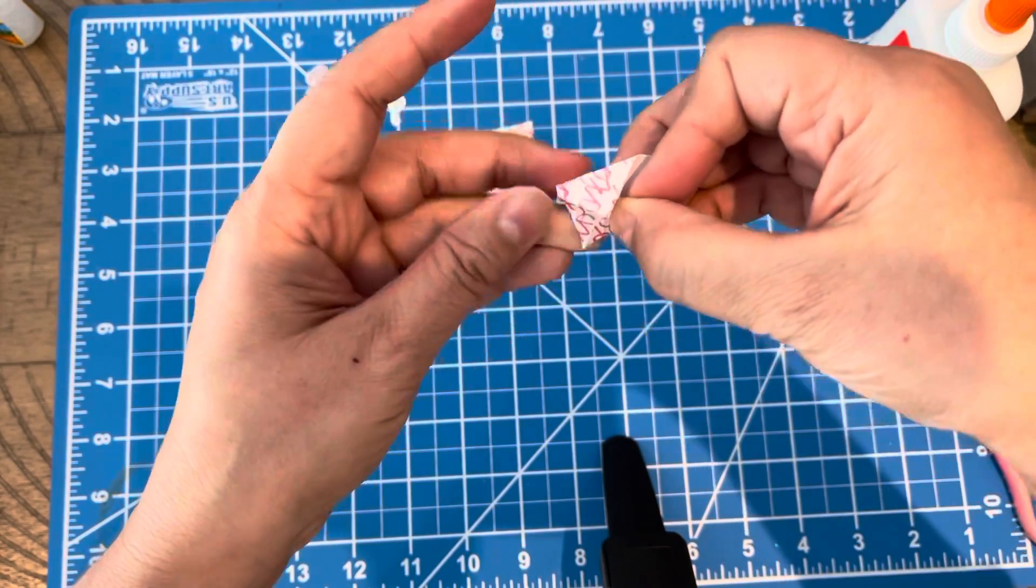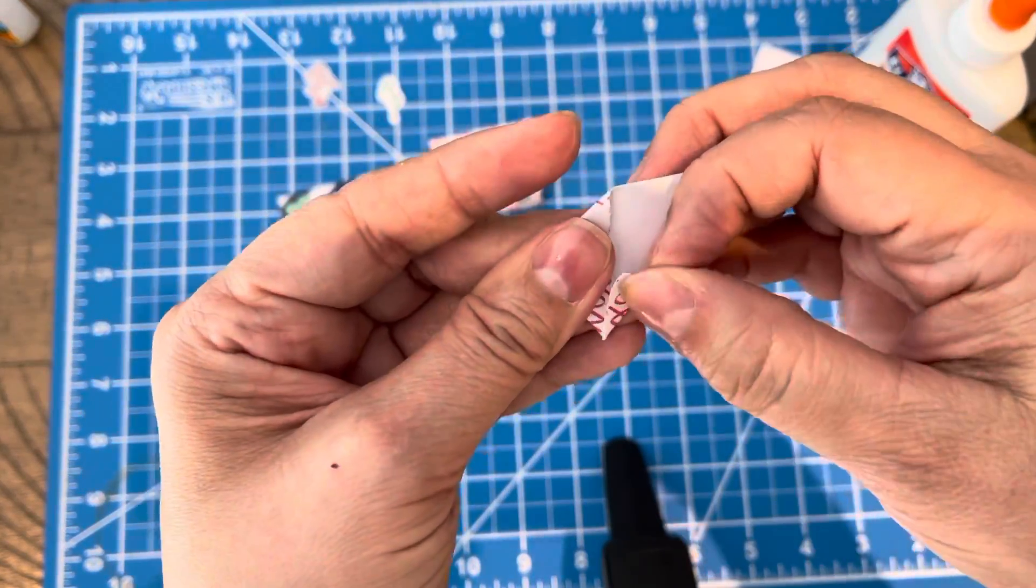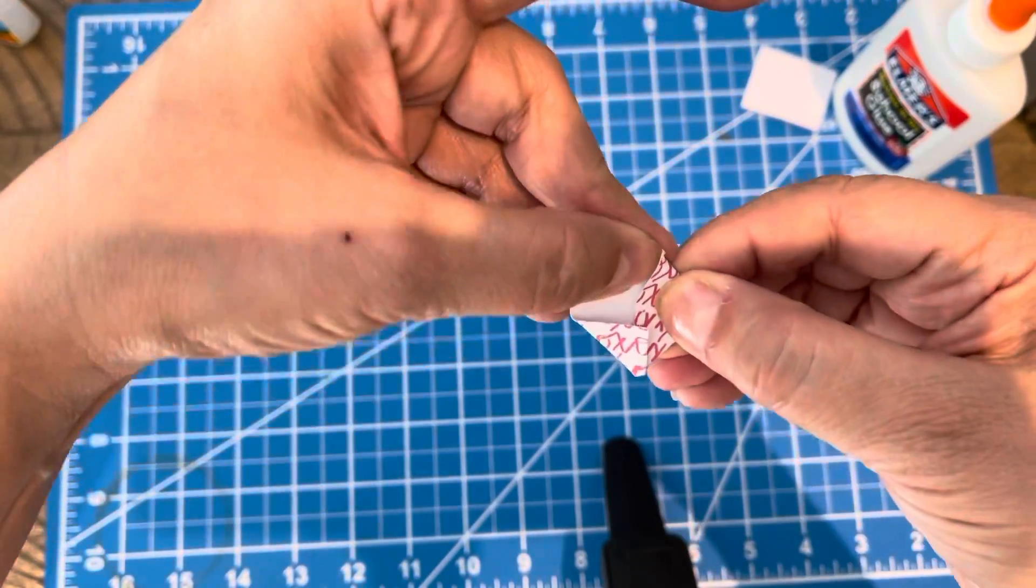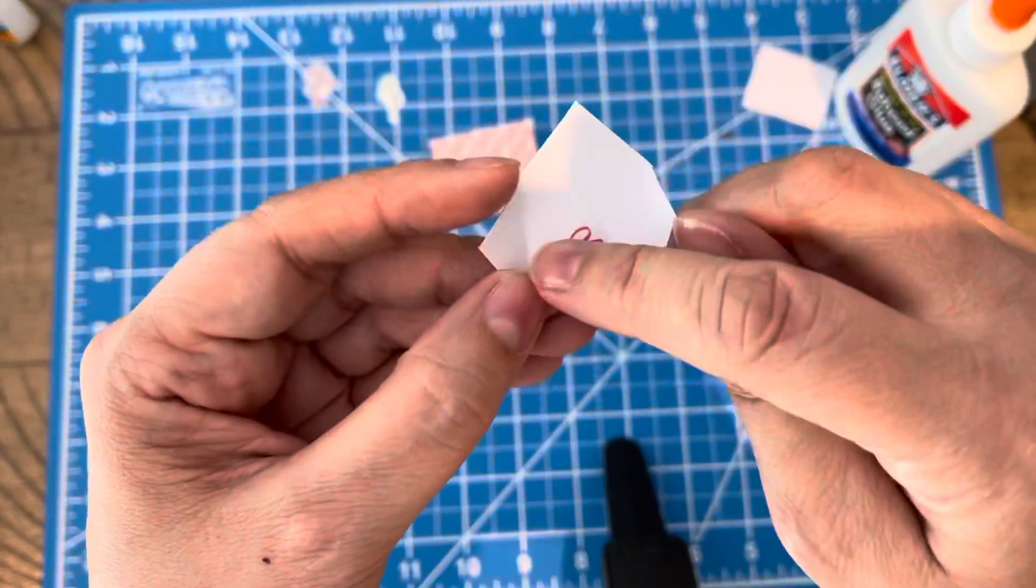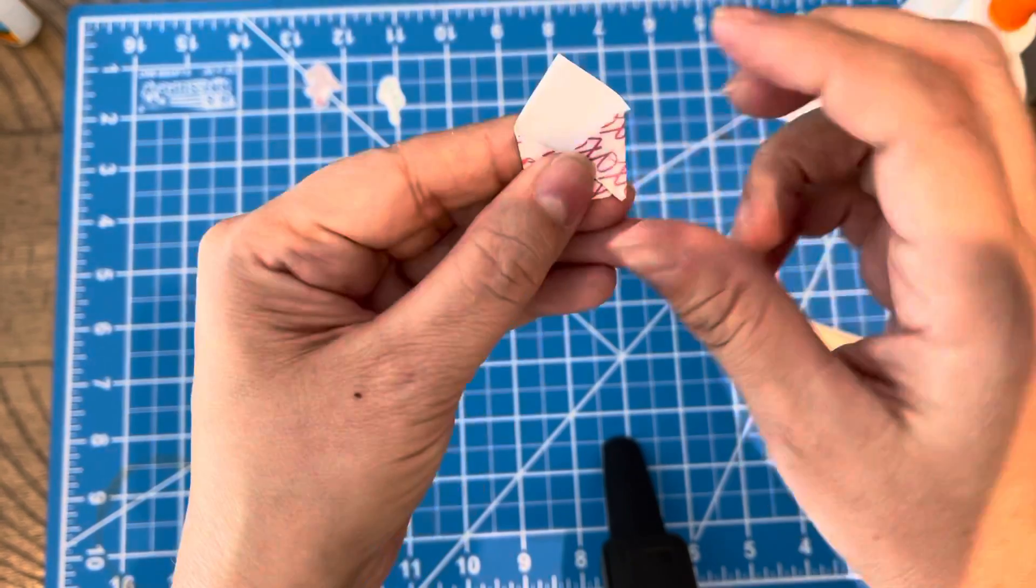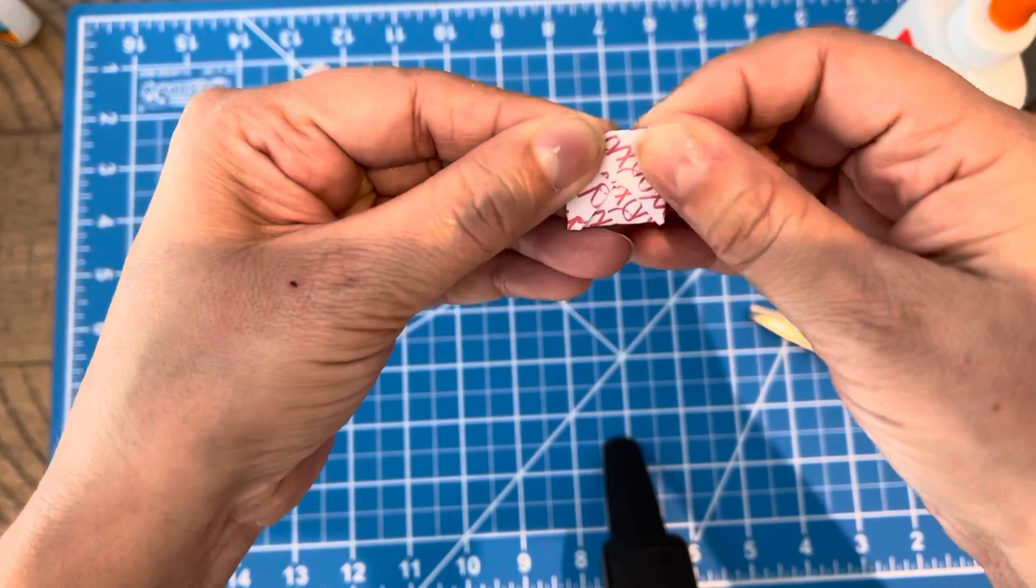And that's it. You want to glue, my hands are in the way I know, but the little points together here, right here. Just glue that together, just make sure you're not closing the envelope up. Once that's done, you fold over the top.